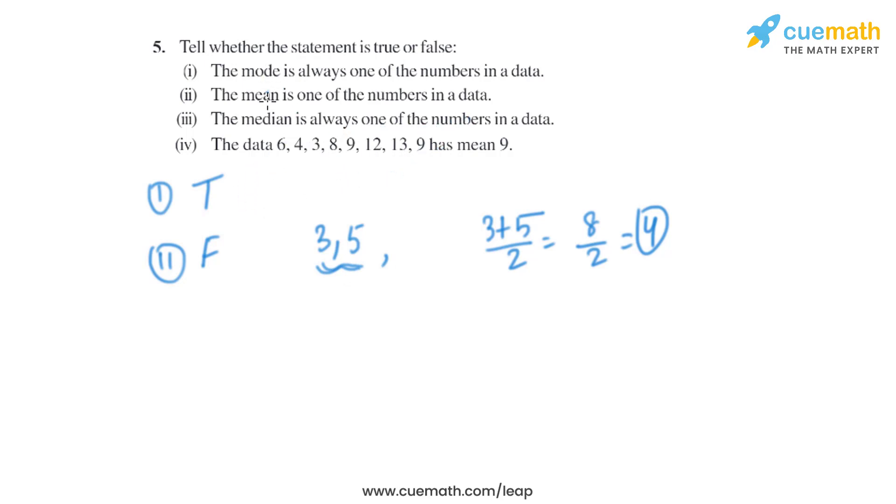Now let's move on to the third part: the median is always one of the numbers in a data. That is true because median is basically the middle term. To find median, first we arrange the data in increasing or decreasing order.